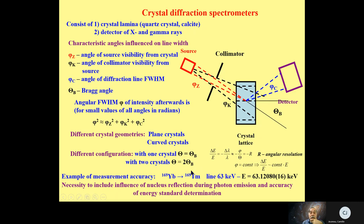Here is an example of very accurate measurements achieved with crystal diffraction spectrometers, where accuracy is better than tenths of an electron volt — extremely precise measurements.